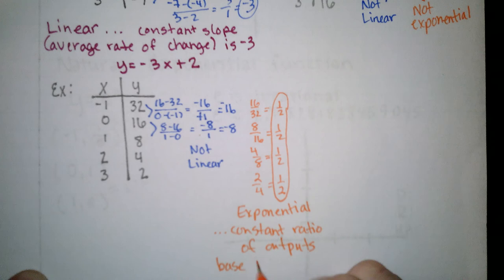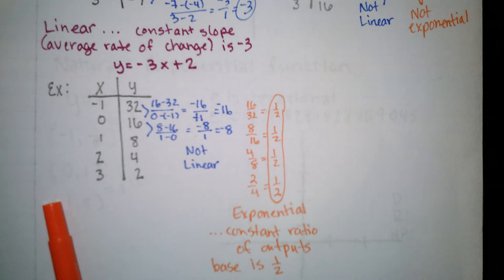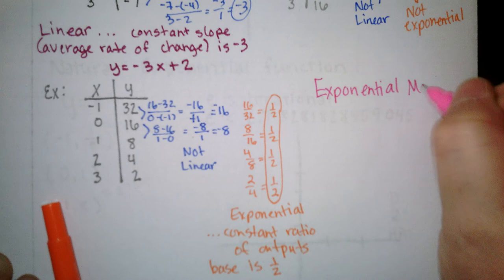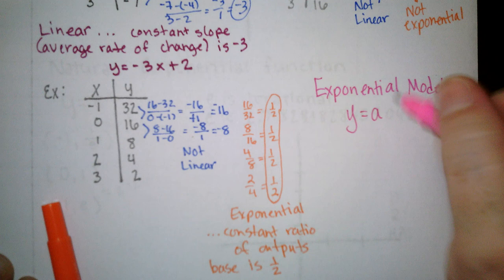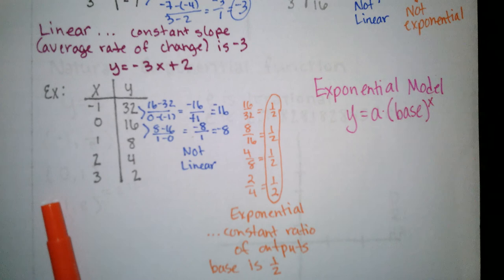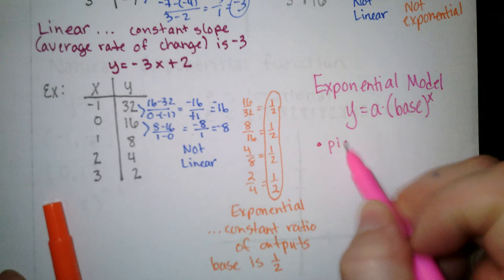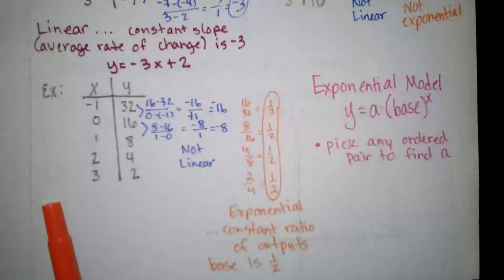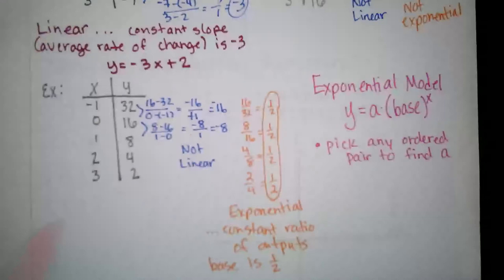So as a reminder or completely new information, depending if you knew this before, an exponential model has the form y equals a, which is like a coefficient or a constant term out front, times a numerical base raised up to the power of x. So we can actually figure out the equation for this exponential function. What we're going to do is we're going to pick any ordered pair to find a. Since we know the base is 1 half, then we just choose any of the ordered pairs off of our list and use the base of 1 half in this format.